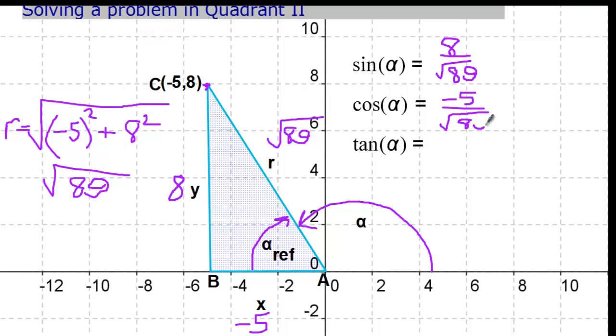I'm leaving it as the square root of 89 because that's an exact number. We can always take that and round that using a calculator later. But for now, we want to use the exact values. The tangent is y over x. In this case, it's going to be 8 over negative 5. So we've just found the sine, cosine, and tangent of the angle formed by the point (-5, 8) using that reference angle.